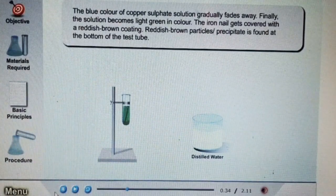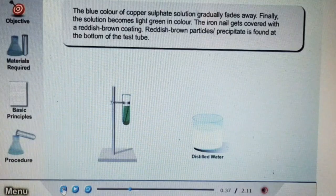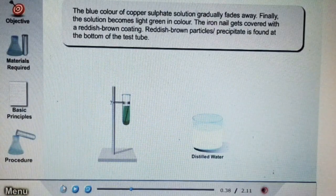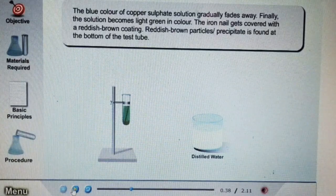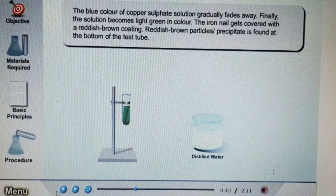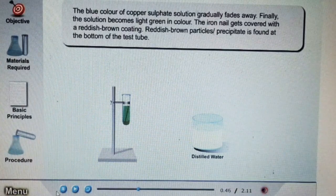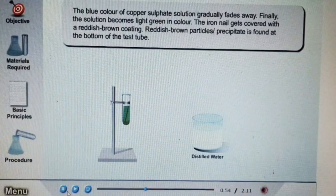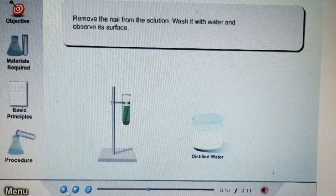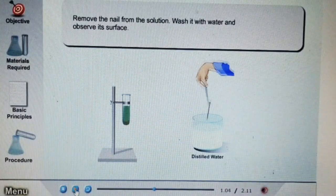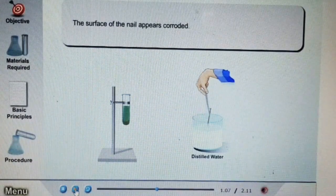This green colored solution also contains reddish brown colored precipitate at the bottom of the test tube. You will find that iron nails get corroded and their surface gets covered by a brown color coating.